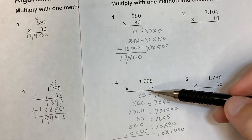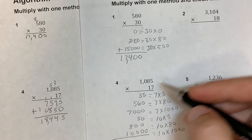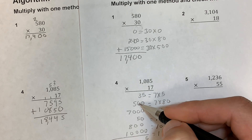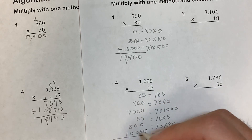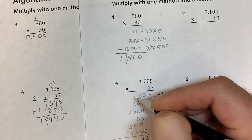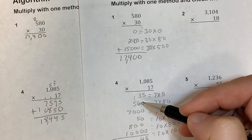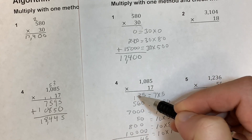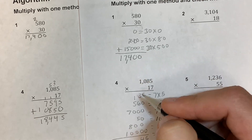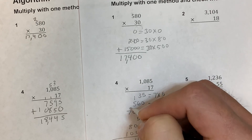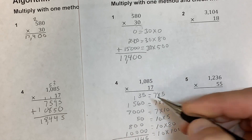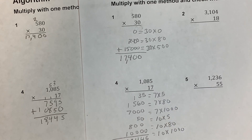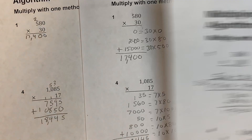Adding all partial products: 5 plus zeros is 5. In the tens: 3 plus 6 is 9, plus 5 is 14, write 4 carry 1. In the hundreds: 800 plus 500 plus 100 is 1,400, carry 1 to thousands. I only have 7,000 in the thousands, so that becomes 8,000, with 1 left over — giving 18,445.